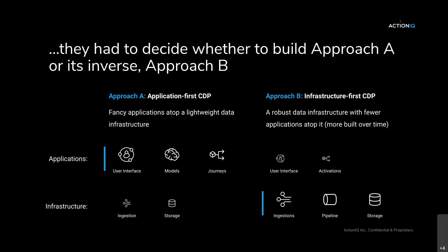Approach A is an application-first CDP. These vendors put more emphasis on the applications — for example, the user interface, predictive models, and journey canvas — than on the underlying data infrastructure. The data infrastructure refers to how data is brought in, stored, and computed. Approach B is the mirror image: focusing more on the underlying infrastructure than on the applications atop of it, with a more robust collection of tools in that infrastructure layer including pipelines for data transformation, and fewer applications on top — with the understanding that applications are expanded over time.